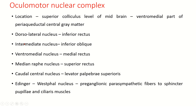The components of the nuclear complex include: the dorsolateral nucleus, which supplies the inferior rectus muscle; the intermediate nucleus, supplying the inferior oblique muscle; the ventromedial nucleus, supplying the medial rectus muscle; the median raphe nucleus, supplying the superior rectus muscle; and the caudal central nucleus, supplying the levator palpebrae superioris.